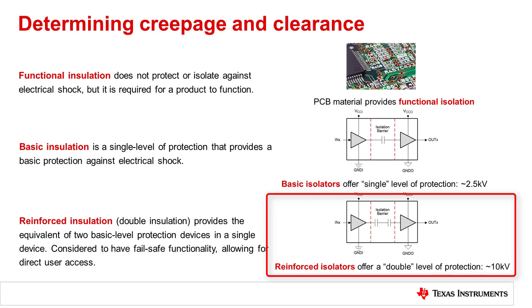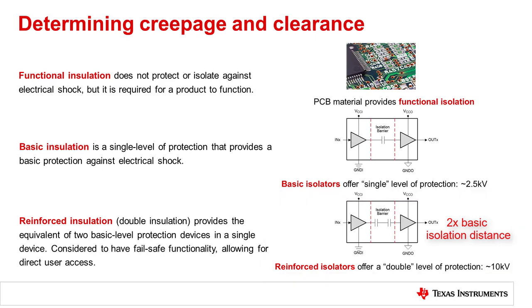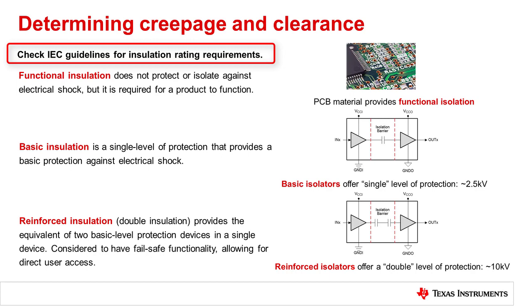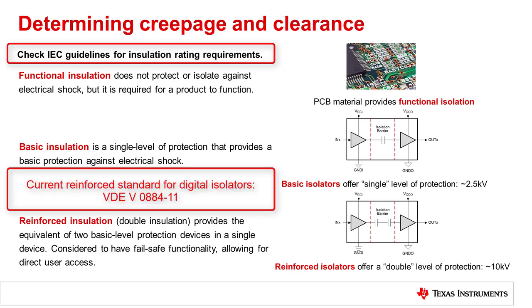For reinforced digital isolators, the level of protection is significantly higher — on the order of 8 kV to 10 kV or more. Reinforced isolator creepage and clearance distances are twice that of basic isolation devices, though both basic and reinforced certifications have minimum requirements for creepage and clearance. In order to achieve a reinforced isolation rating, semiconductor manufacturers are required to provide safety and functionality according to industry standard test methodologies. The classification of reinforced isolation for a digital isolator IC is achieved and documented through the certification process, with the most recent standard for digital isolators at the time of this video release being VDE 0884-11.